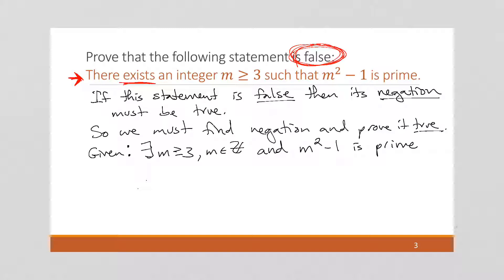So in the problem, it states such that, but that's really another way of writing and, right? I'm saying, this is true, and this is true.